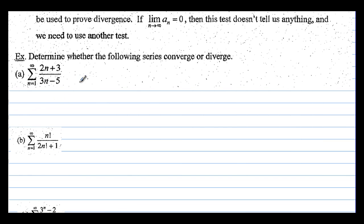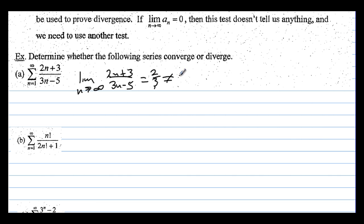Example A: we take the limit as n approaches infinity of (2n + 3) / (3n − 5). This equals 2/3, which does not equal 0. Therefore, the series diverges by the nth term test.